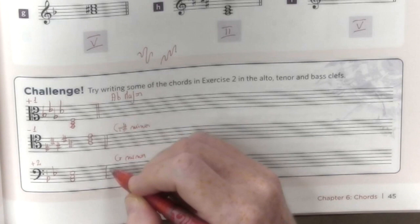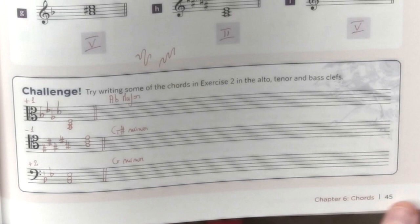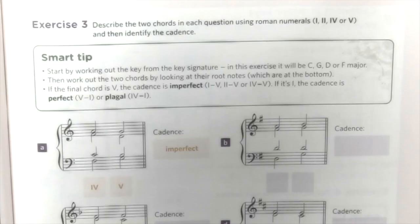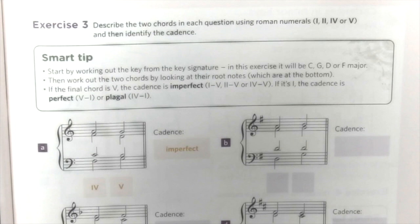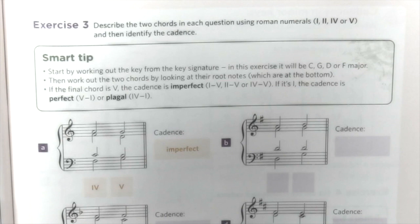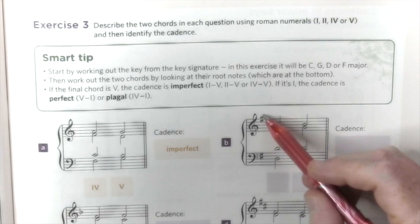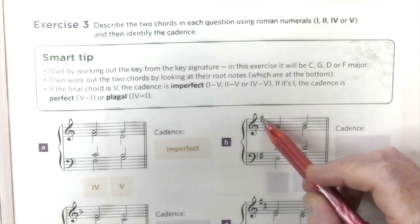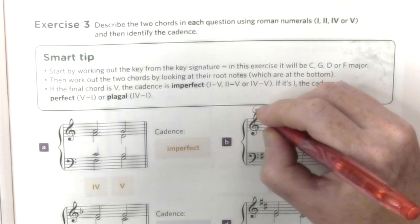Let's move on to exercise 3, which is about cadences. We need to identify the cadences by identifying the chords. We don't know the key, but we can find it through the key signature. With one sharp, we take the last sharp of the key signature plus one semitone: F-sharp plus one semitone is G. This is in G major — or E minor, but in this case it's G major.